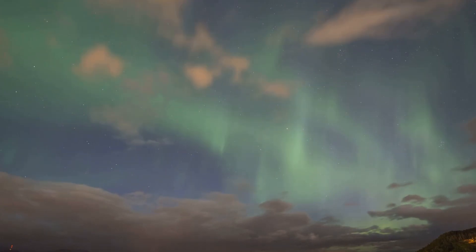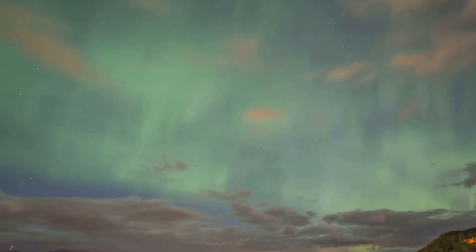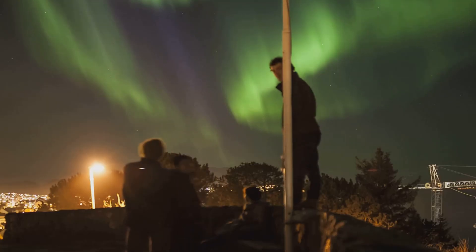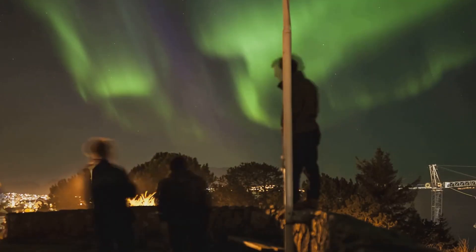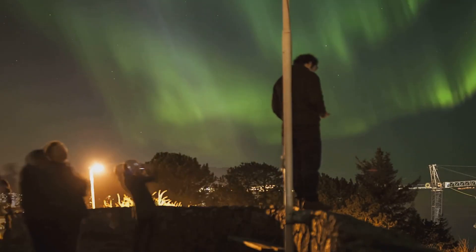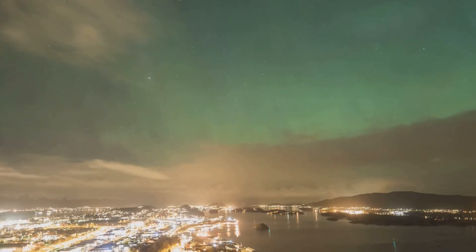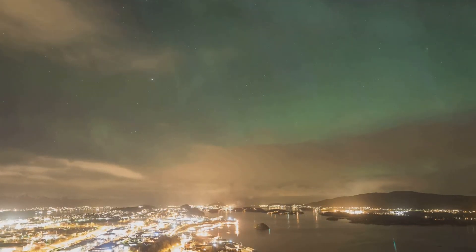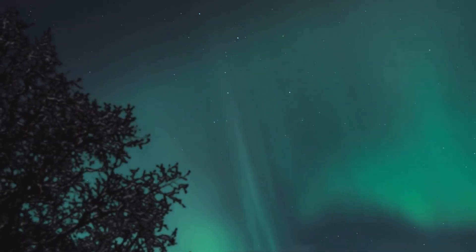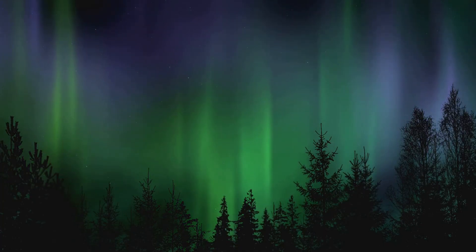Then came the year 2025, and with it, the solar storm we had been anticipating. It was unlike anything we had seen before. The sun erupted with a power and intensity that sent a wave of charged particles hurtling towards Earth. Once they reached our atmosphere, they began to dance with the gases present, creating a mesmerizing display of auroras. These northern and southern lights, typically confined to the polar regions, were seen further south than usual, painting the sky with hues of green, purple, and red.